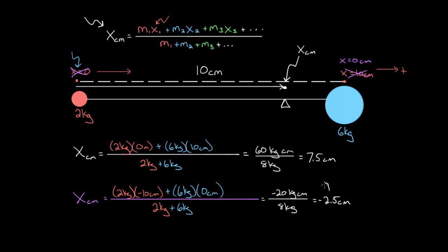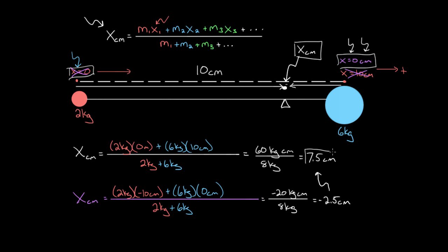You might be worried — we got a different answer. But the location didn't actually change. This negative 2.5 centimeters is measured relative to this x equals zero, which is the six kilogram mass. So negative 2.5 centimeters from there means 2.5 centimeters to the left — which, lo and behold, is exactly the same point as before. Since 7.5 plus 2.5 equals 10 centimeters, it gives you the exact same location for the center of mass. It has to — it can't change based on which point you call zero. But you have to be careful and consistent with your choice, and at the end you need to know where your answer is measured from, otherwise you won't be able to interpret what the number means.